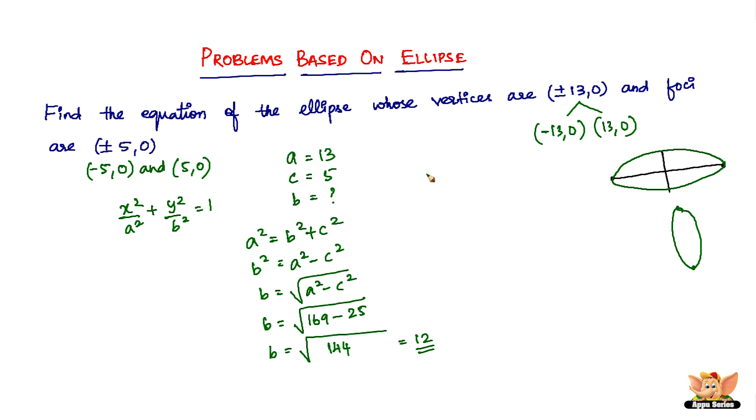Now we can substitute the values of a and b in this equation to define the equation of the ellipse. We have x²/13² + y²/12² = 1, which is x²/169 + y²/144 = 1. This is the required equation of the ellipse.